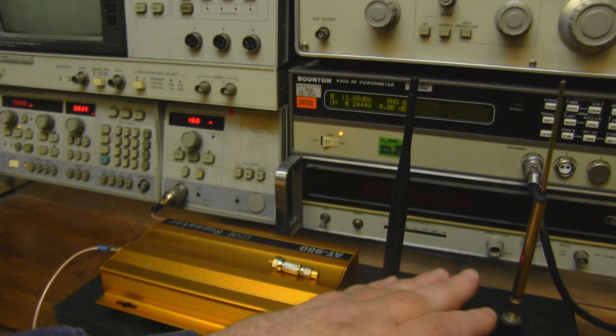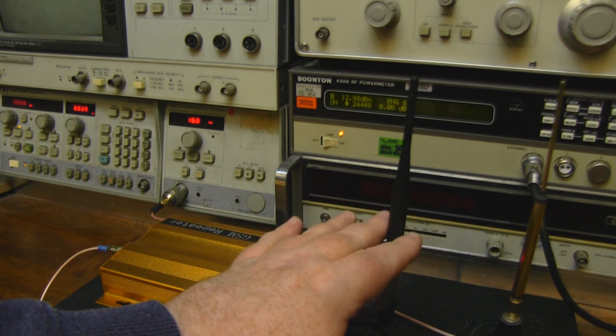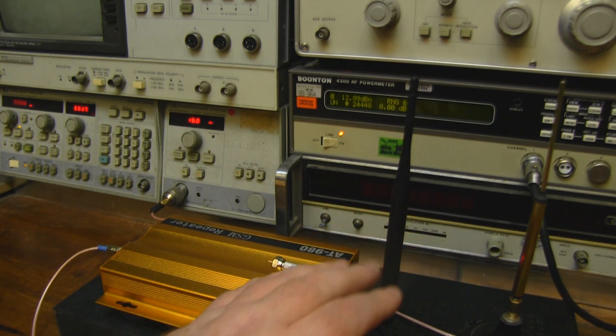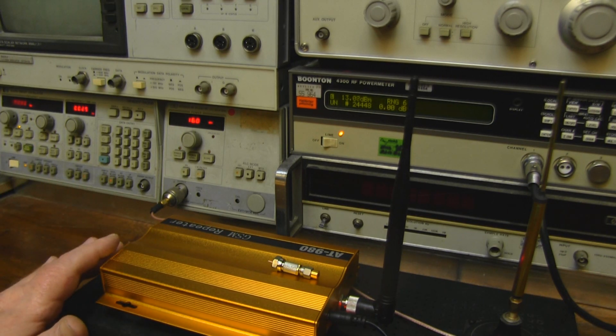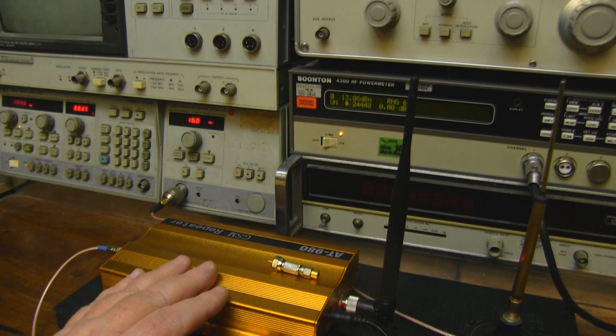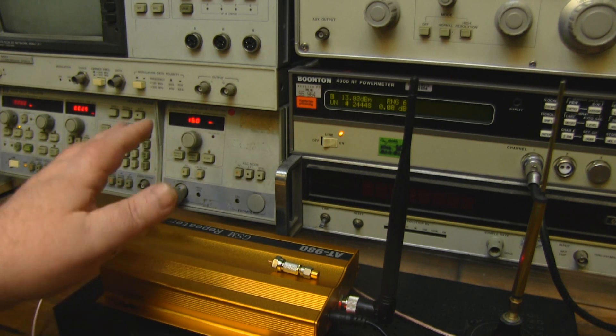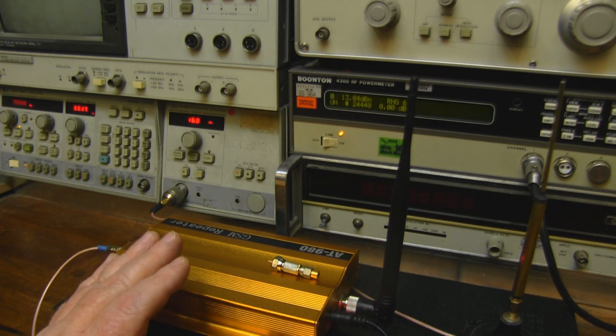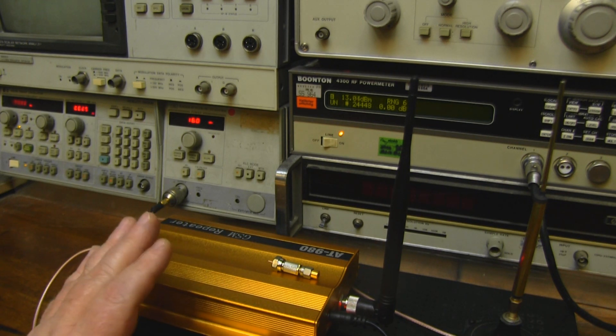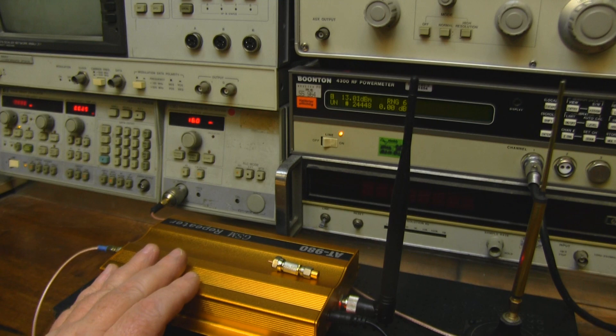Remember we've got our signal generator 16 dB here being picked up by this antenna here, being fed into the amplifier and then output directly into our power meter. We're only producing 13 dBm from our 16 dBm signal, so it's just as bad in reverse as a receiving setup as it is a transmitting setup.